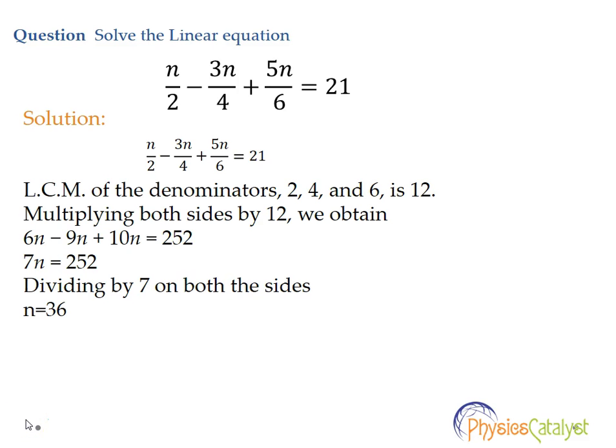Question number 1. Solve the linear equation n divided by 2 minus 3n divided by 4 plus 5n divided by 6 is equal to 21.